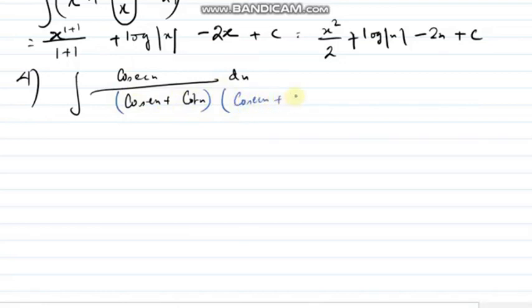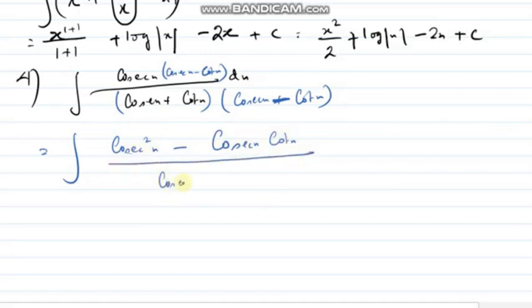Yes, we will multiply by cosec x minus cot x. So, numerator also has multiplied cosec x minus cot x. So, it will be cosec square x minus cosec x cot x. Divide by, denominator will be cosec square x minus cot square x. And the answer is 1, right? Denominator answer is 1. Identity.